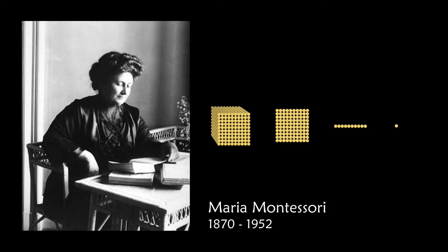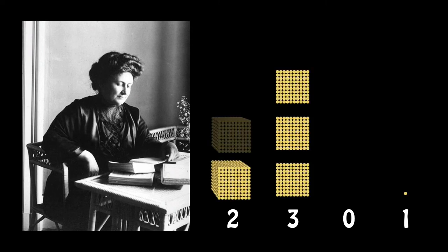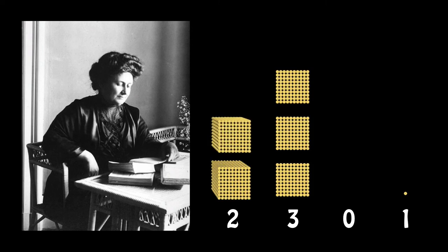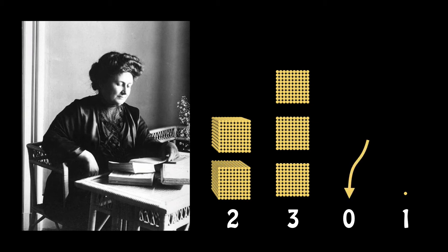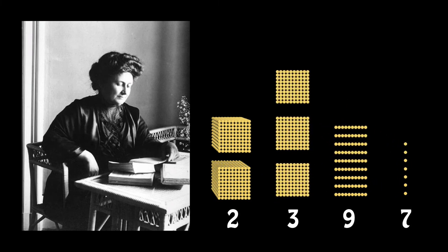Maria Montessori used manipulatives to teach mathematics to children. Does her number system use place value, like a Chinese abacus? Or is it more similar to the ancient Egyptian number system? The first clue is that, like the ancient Egyptian number system, it lacks a symbol for 0. The second clue is that, like the ancient Egyptian number system, you could drop all the blocks, and someone could still figure out what number you had built. So here I've scrambled them all — can you figure out what number I had built? Of course you can. The number is 2,397.